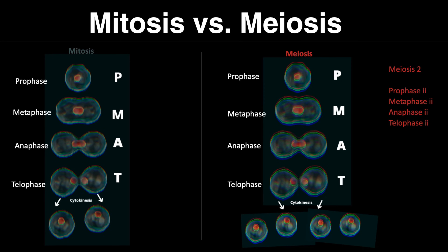In mitosis: during prophase, chromosomes condense and become more visible — microtubules attach to the chromosomes. In metaphase, chromosomes are duplicated and line up. In anaphase, microtubules separate the sister chromatids from the chromosome and pull them to opposite spindle poles — chromatids become chromosomes during this stage. In telophase, two clusters of chromosomes reach the spindle poles and chromosomes begin to unwind. Then cytokinesis splits the cell into two.